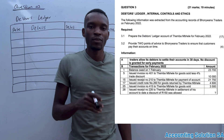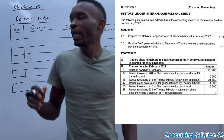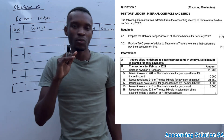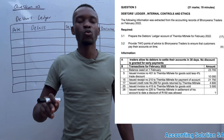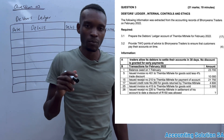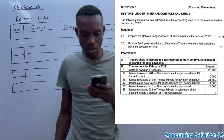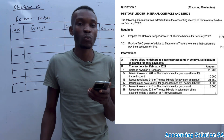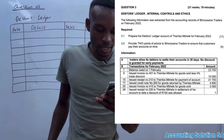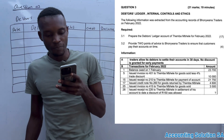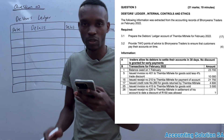For my grade 10 students, in this video I'm going to show you how to simply prepare a debtors ledger account. We're going to deal with a creditors transaction, which is chapter 1 for term 2. I have a 2022 question paper, so let's go straight into the question. They said: prepare a debtors ledger account for Tembambele for February 2022.